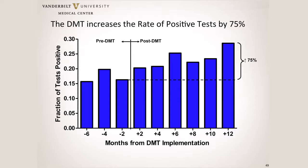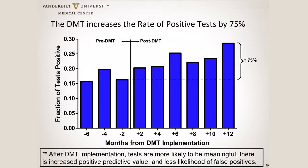This slide is really important. When trying to figure out whether we're doing any good, we looked at the rate of positivity of tests and were able to increase that by 75%. Why is that relevant? If you increase your pre-test probability, you increase your positive predictive value after the test is performed — that's just basic lab medicine. We're winnowing down the number of patients in whom we do the test so that we're doing it in the most appropriate settings, therefore increasing the positive predictive value and minimizing the number of false positives.